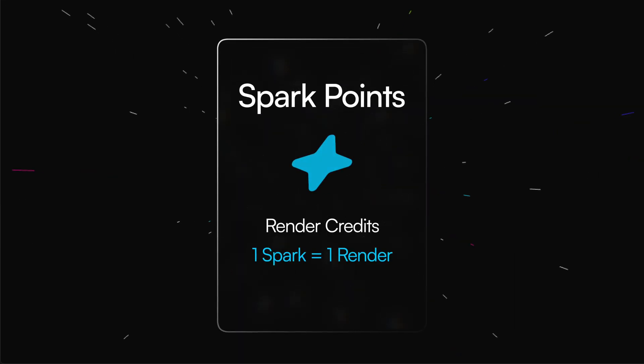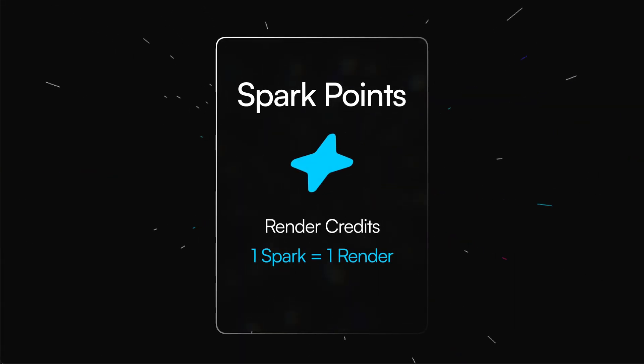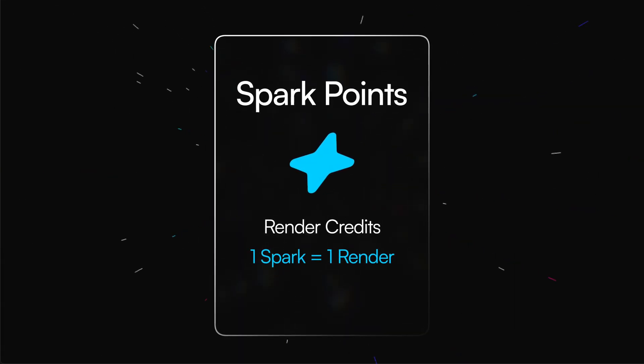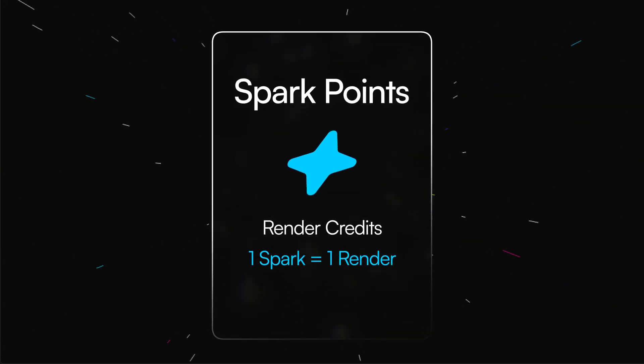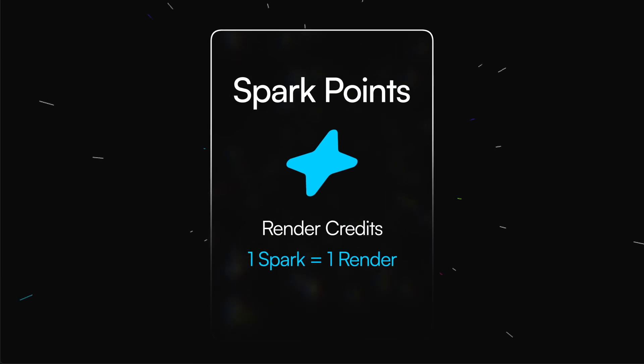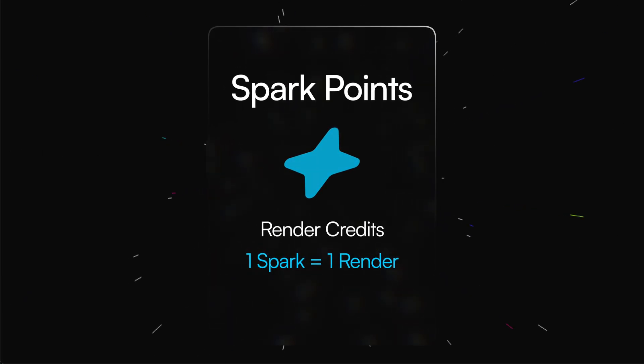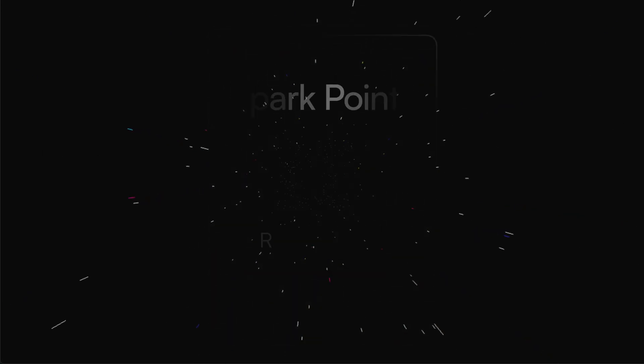That is why spark points exist alongside Sogny tokens. One spark point always equals one standard render — and by a standard render I mean a 20-step SDXL image. This never changes, no matter what's happening in the crypto markets. The market could be going crazy and it doesn't matter — one spark point just gets you that one render.